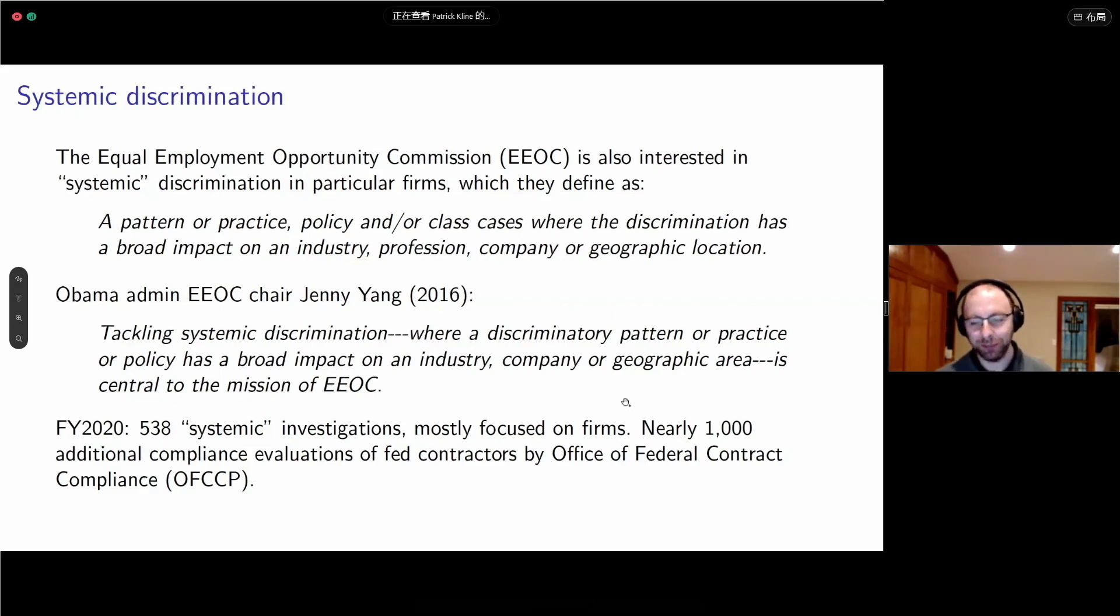What the EEOC means when they use that word is a pattern or practice policy and/or class cases where the discrimination has a broad impact on an industry, profession, company, or geographic location. As EEOC Chair Jenny Yang under the Obama Administration noted, tackling systemic discrimination is central to the mission of the EEOC. In fiscal year 2020, the EEOC launched 538 systemic investigations. There's also elevated requirements for federal contractors who have to enact affirmative action plans and are held to a higher standard, enforced by the Office of Federal Contract Compliance.